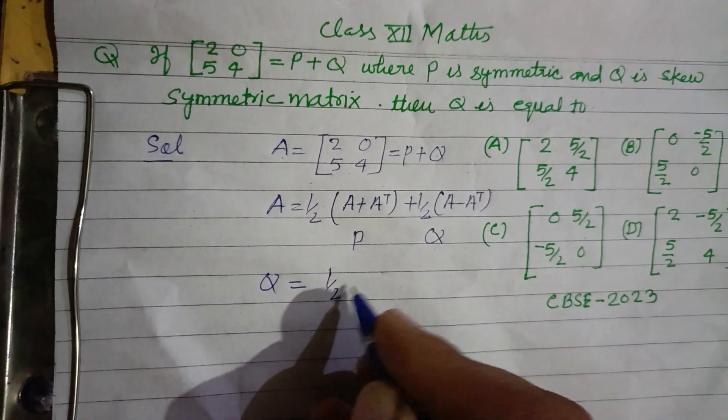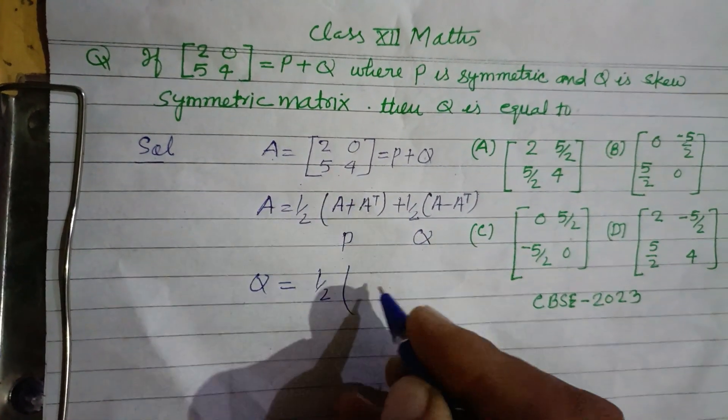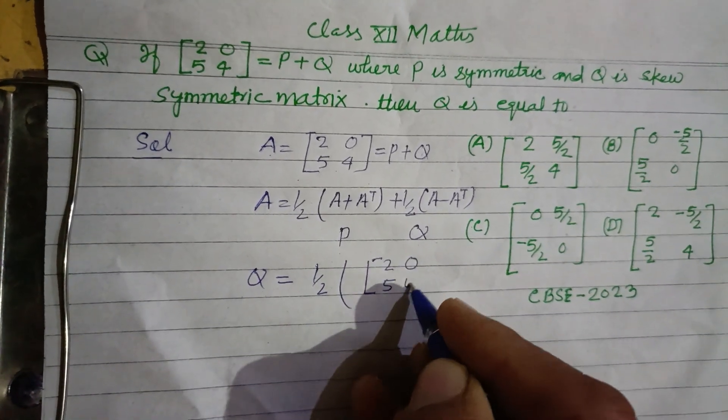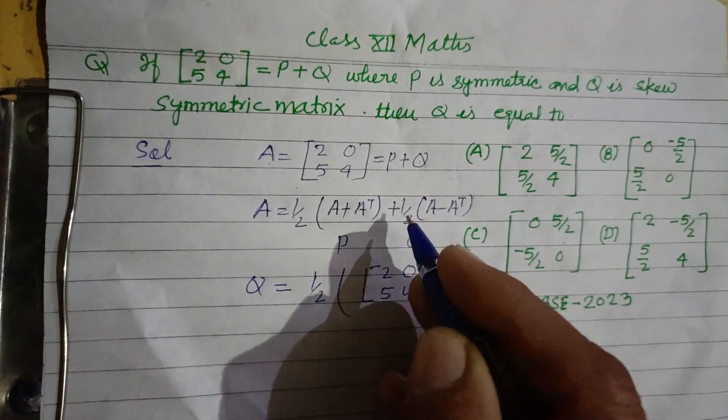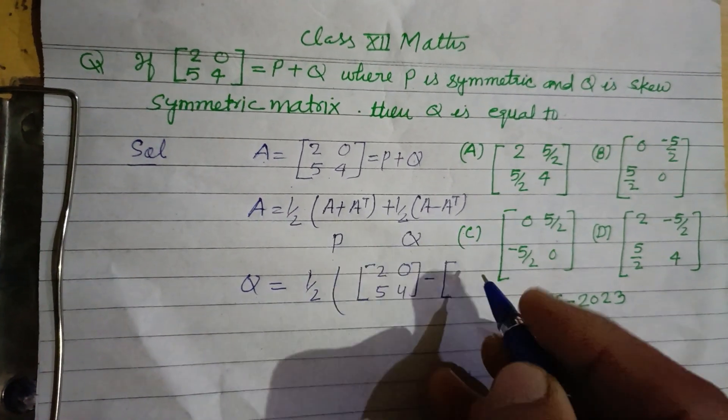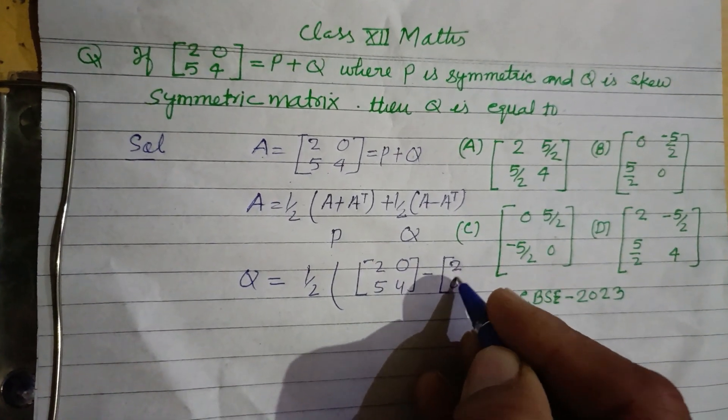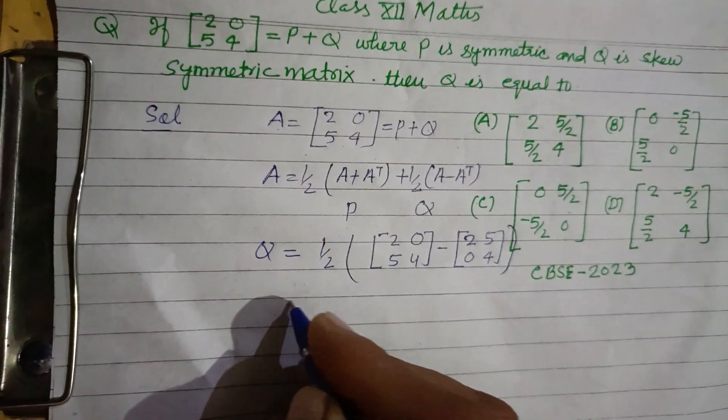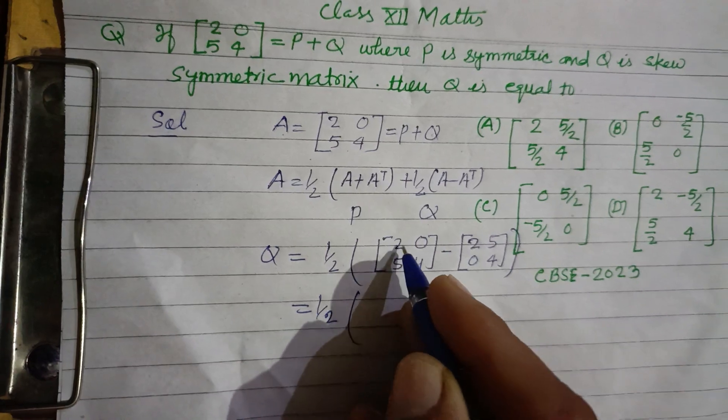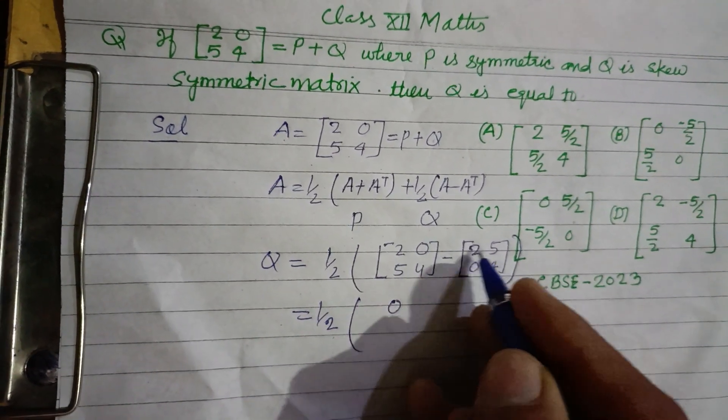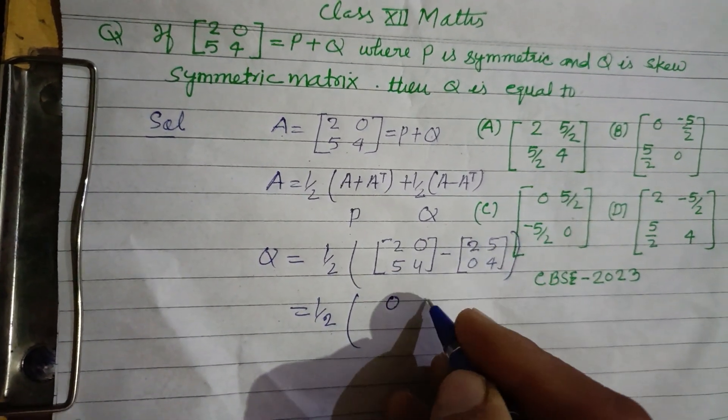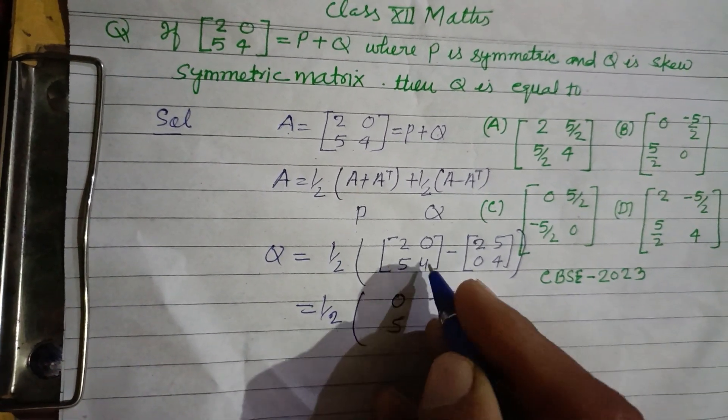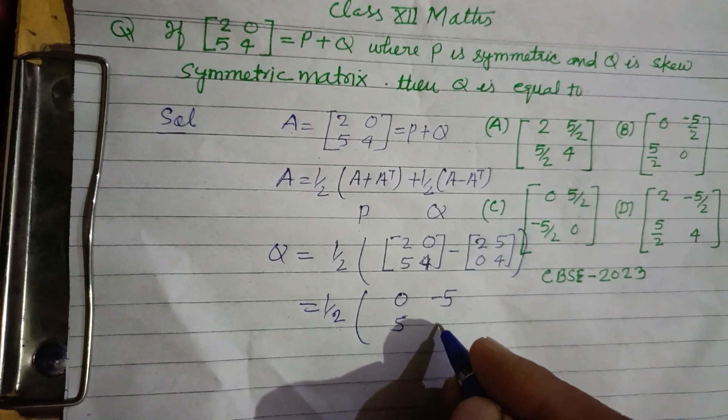half of (A minus A transpose). A is [2 0; 5 4], and A transpose is [2 5; 0 4]. So this gives us: 2 minus 2 is 0, 0 minus 5 is -5, 5 minus 0 is 5, and 4 minus 4 is 0.